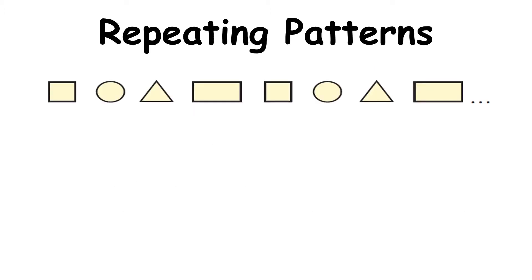Here we have a repeating pattern. So we have a square, circle, triangle, rectangle, square, circle, triangle, rectangle. Dot dot dot means it will continue in this way forever. Notice how the pattern repeats every four. So we would generally talk about these as terms but they're in this case shapes. So every four shapes and then it will start the pattern again.